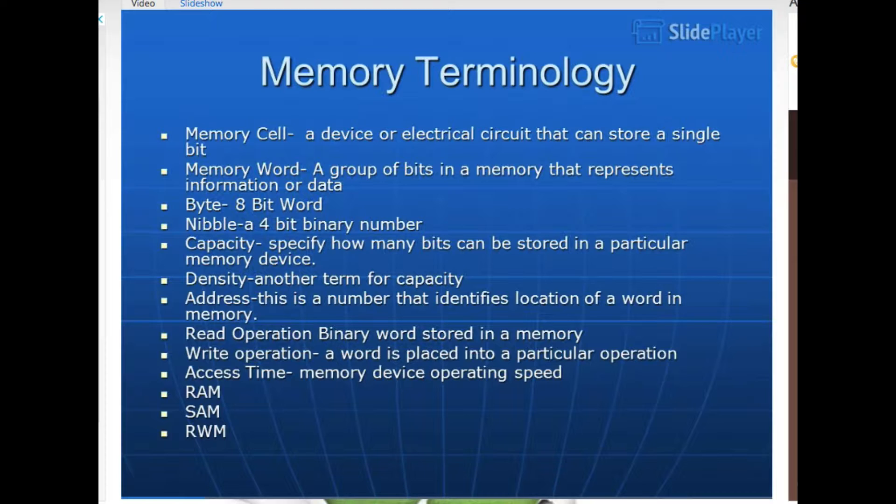Capacity specifies how many bits can be stored in a particular memory device. Density, another term for capacity. Address is a number that identifies location of a word in memory. Read operation, binary word stored in memory. Write operation, a word is placed into a particular operation. Access time, memory device operating speed. RAM, ROM, RWM.